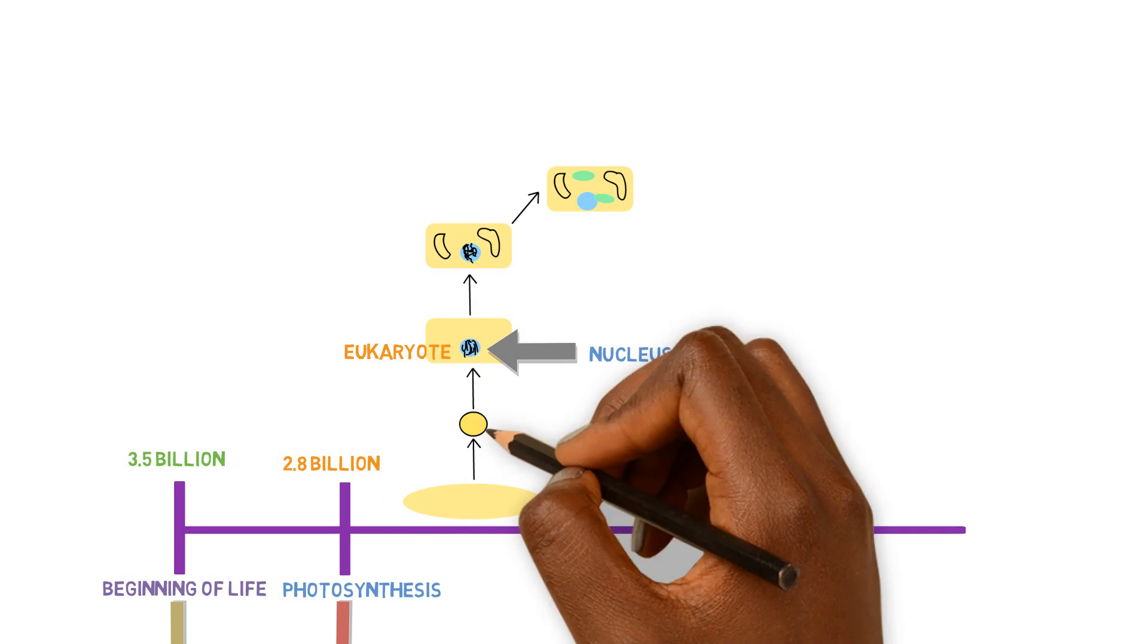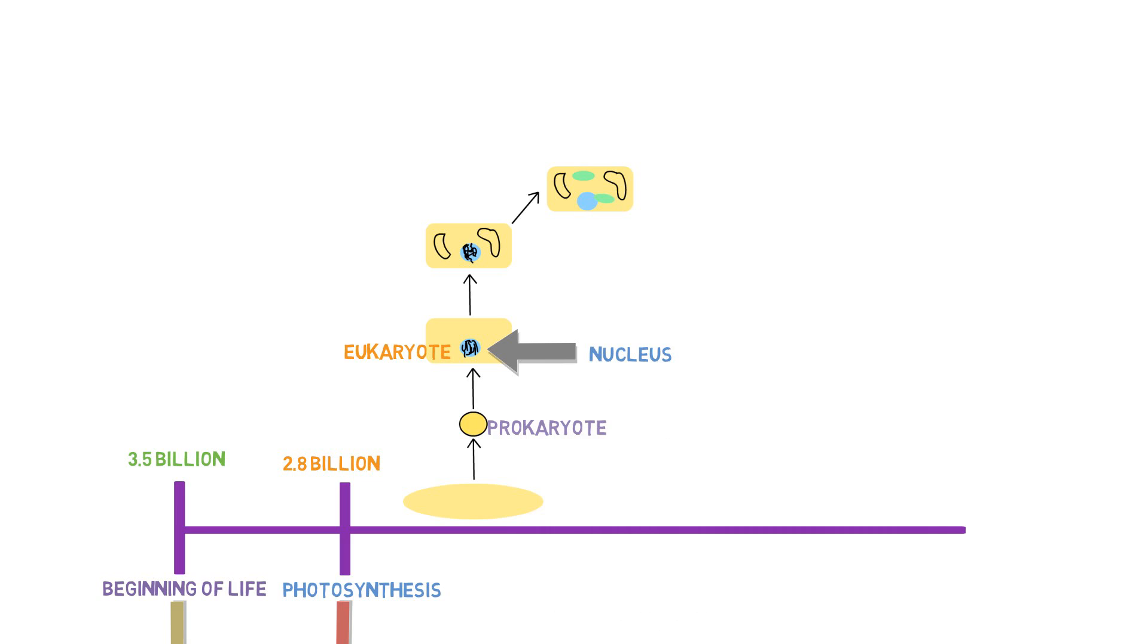When there's no nucleus inside the cell, it's known as a prokaryotic cell. We are dividing into two different categories of cells. This is important because eukaryotic cells eventually become plants and animals, while prokaryotes remain as bacteria, archaea, and cyanobacteria. This shift to DNA inside the nucleus is super important for life as we know it today.